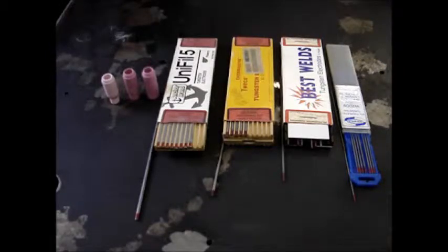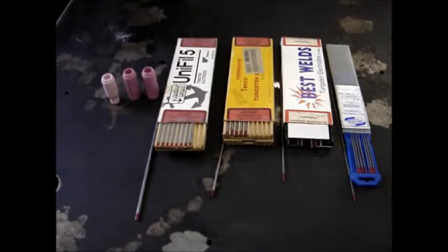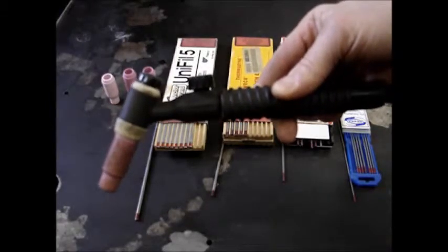Now, I'm going to run through some of the parts of a TIG torch, or the torch, the welding whip, basically, for welding with TIG welding. So first, I will show you this one, which is an air-cooled TIG torch.